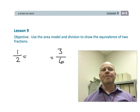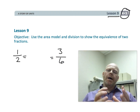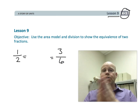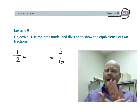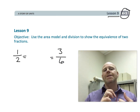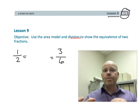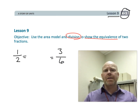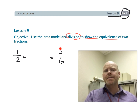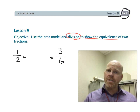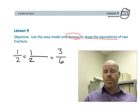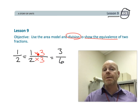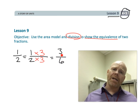This is fourth grade, module five, lesson nine. In contrast with some previous lessons where we were using multiplication to show how two fractions were equivalent, now we're going to begin a series of lessons where we are going to be using division to show that two fractions are equivalent. We know that one-half is equivalent to three-sixths because one times three is three, and two times three is six, and because both the numerator and the denominator are being multiplied by three, we know that the two fractions are equivalent.